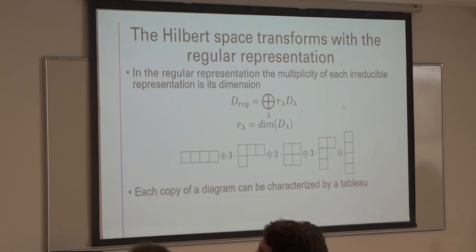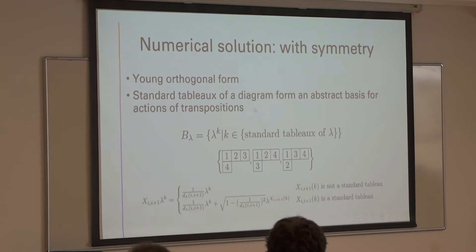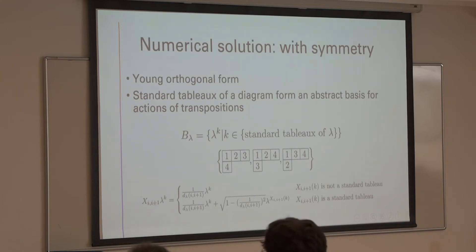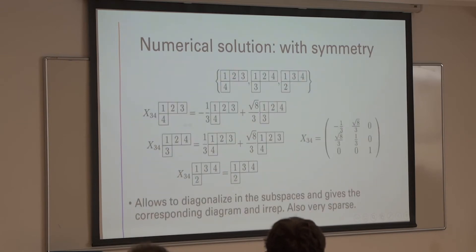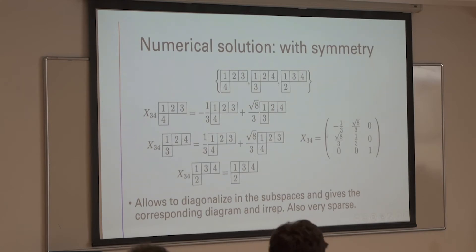Generally when we speak about diagrams we need to think about symmetrizing in rows and anti-symmetrizing in columns. Another use for Young tableaux is the Young orthogonal form algorithm — it uses the tableaux of a given diagram as an abstract basis for transpositions. In our case the transpositions are just the exchange operators, so for this basis the operator X₃₄ can be written as a matrix. This algorithm is very useful because each row and each column has at most two entries, so these matrices are very sparse, which helps numerically. This method also gives us a way to find the actual diagram in the irreducible representation.